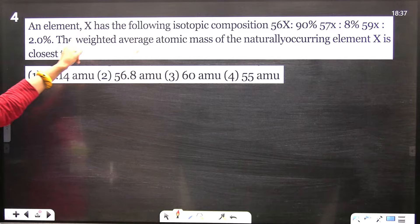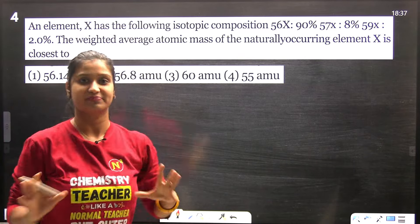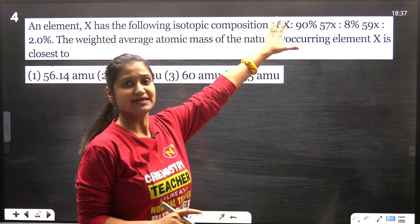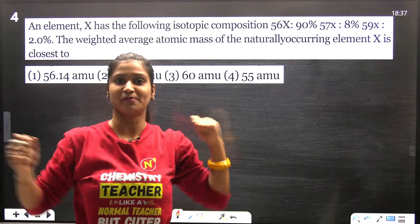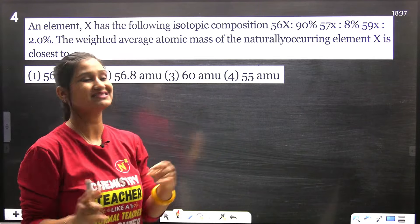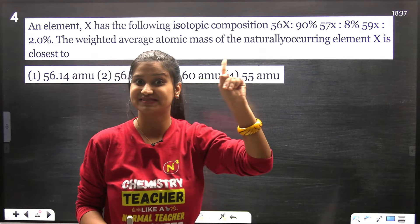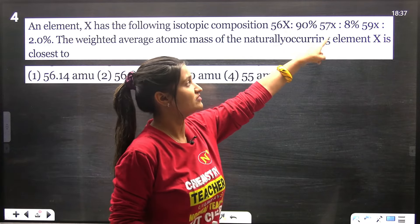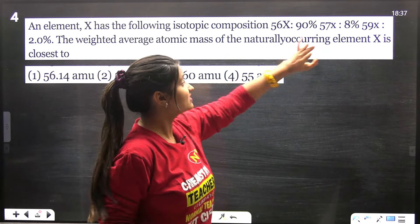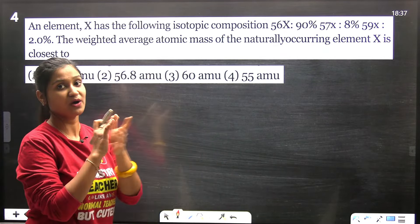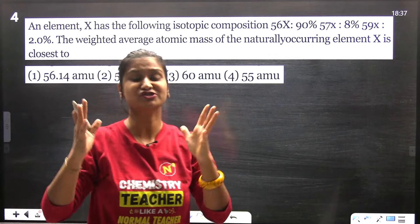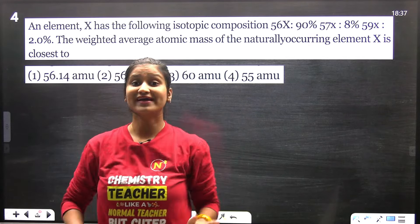Let's talk about the next question. An element X has the following isotopic composition. The atomic mass is 56, which is 90% in nature; 57, which is 8%; and 59, which is 2% in nature. So let's tell the weighted average atomic weight.